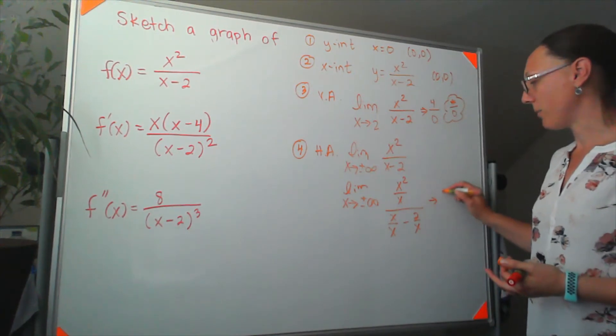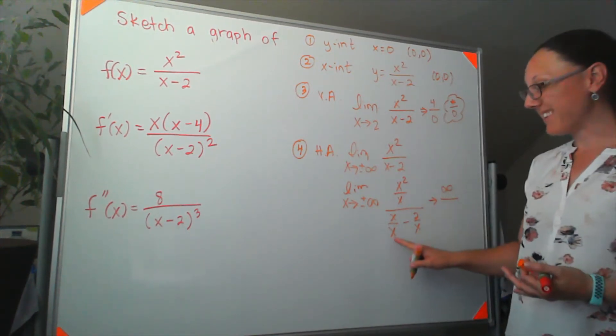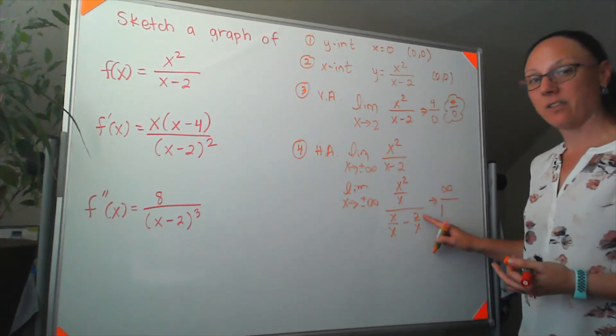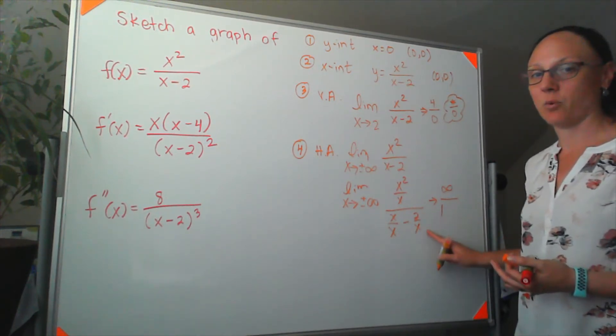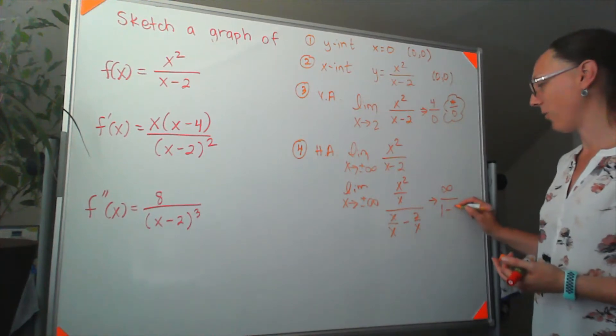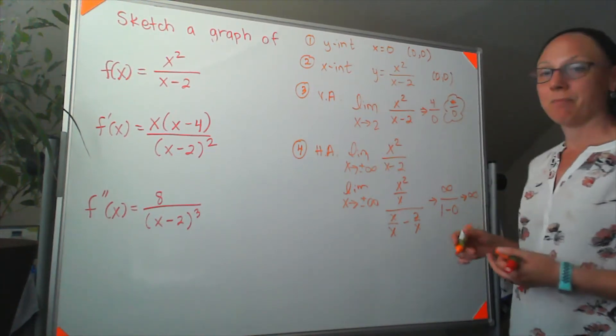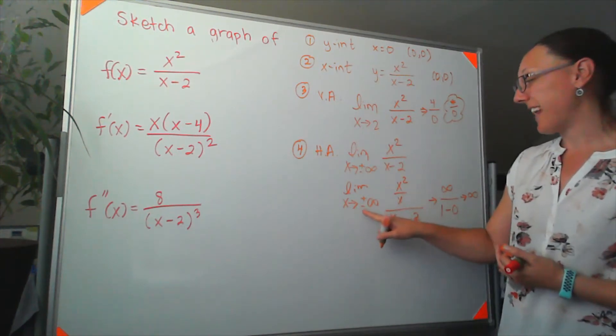Now, doing this means that in my numerator, x squared over x ends up being infinity. But in the denominator, x over x is a 1. And in the limit as x approaches infinity of 2 over x, this is going to 0, which means overall this is headed to infinity.